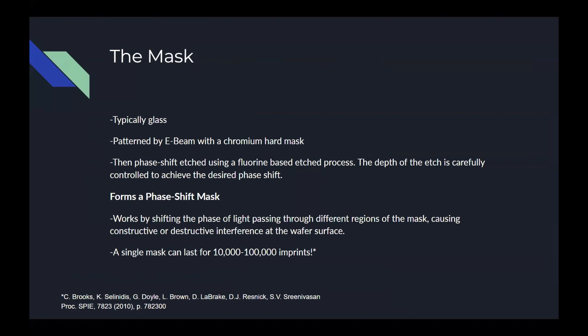First, electron beam lithography is used to pattern quartz, and a chromium hard mask is applied before a fluorine-based etch. The etched depth is extremely precisely controlled to achieve total destructive interference in areas where no exposure is wanted at the surface. This mask can be used for tens of thousands of patternings. The only limit is residual buildup caused by particle contamination over time from repeated use with resist.